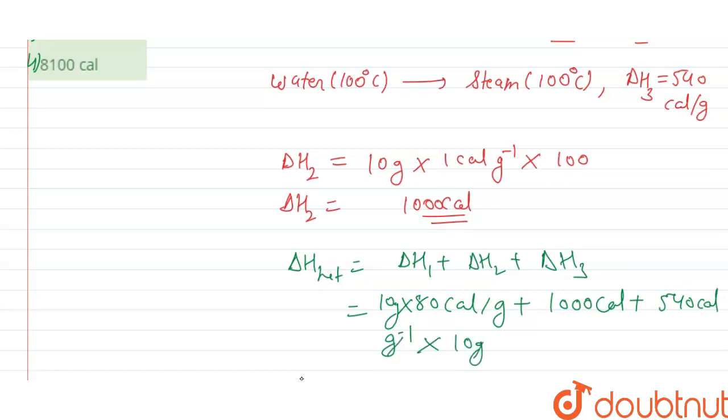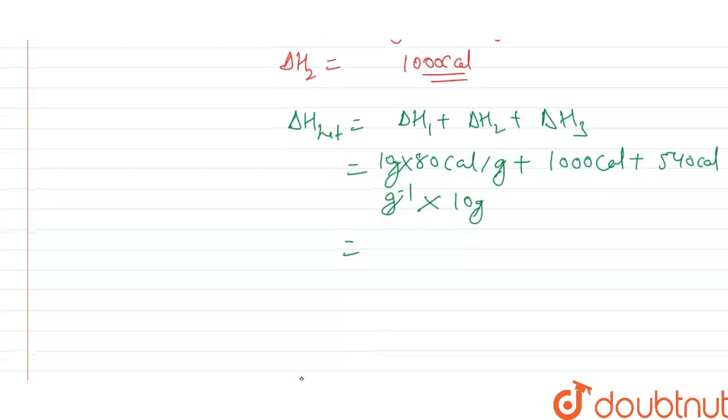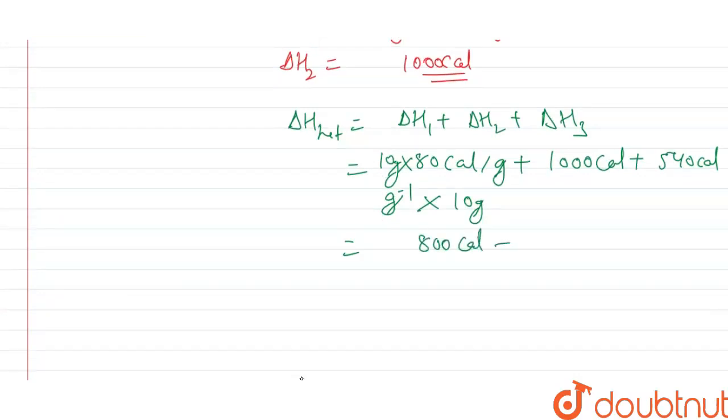We get 800 calorie plus 1000 calorie plus 5400 calorie.